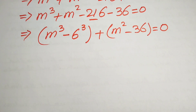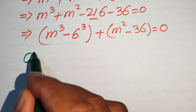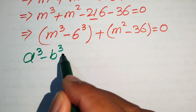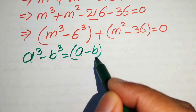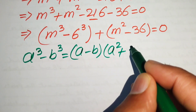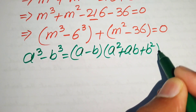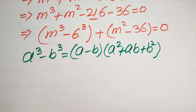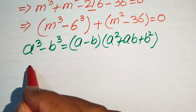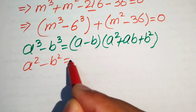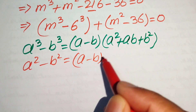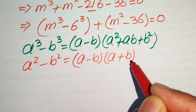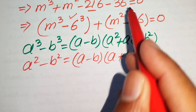In the next step we need two formulas. The first is the difference of cubes: a³ − b³ = (a − b)(a² + ab + b²). The second is the difference of squares: a² − b² = (a − b)(a + b). We apply the cubic formula to the first term and the square identity to the second term.